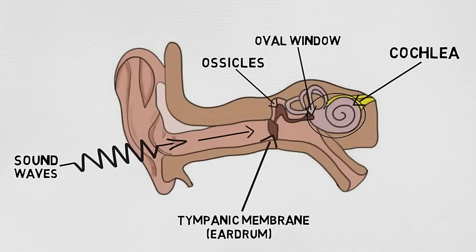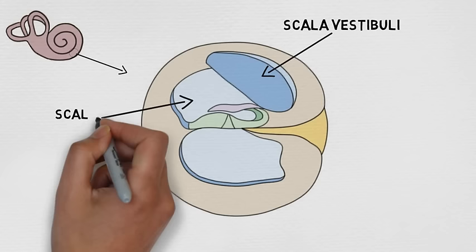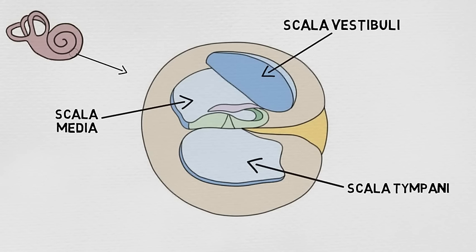The interior of the cochlea consists of three fluid-filled canals that run parallel to one another: the scala vestibuli, the scala media, and the scala tympani. The scala vestibuli and scala tympani contain a fluid called perilymph, and the scala media contains a fluid called endolymph.